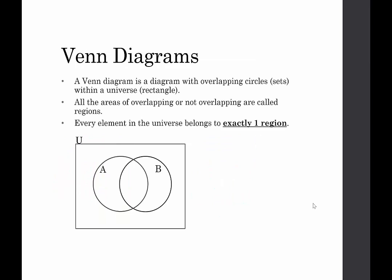Just to recap: a Venn diagram is a diagram with overlapping circles representing the sets within a universe, which is the rectangle. All the areas of overlapping or non-overlapping pieces are called regions. Every element in the universe belongs to exactly one region — that is so important. If we have some element in the universe, it goes in one of the four regions, and that's it. One place.